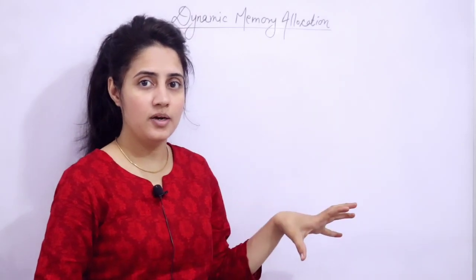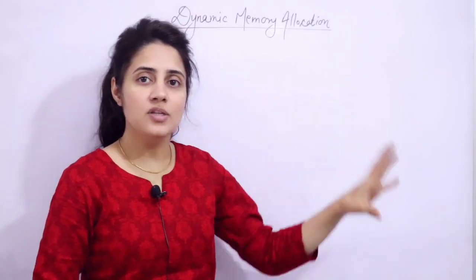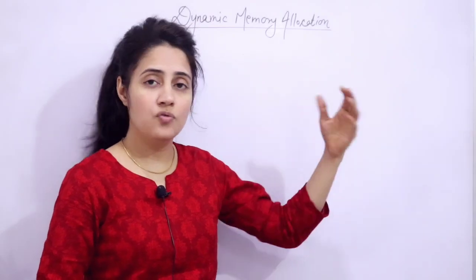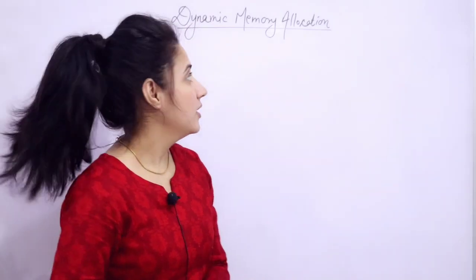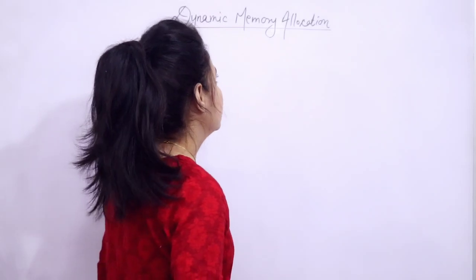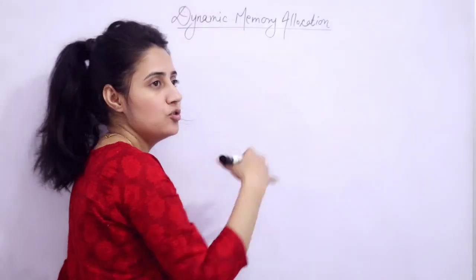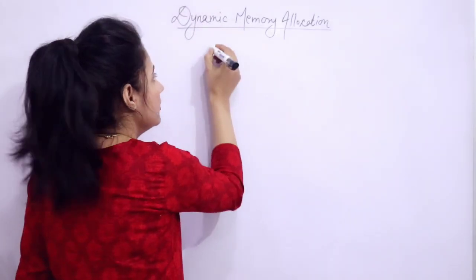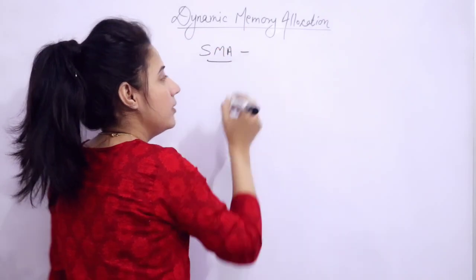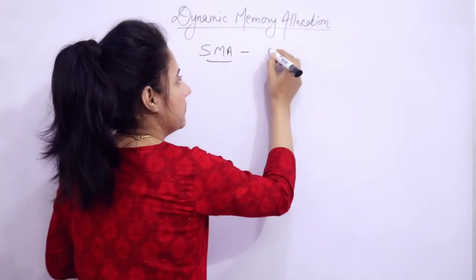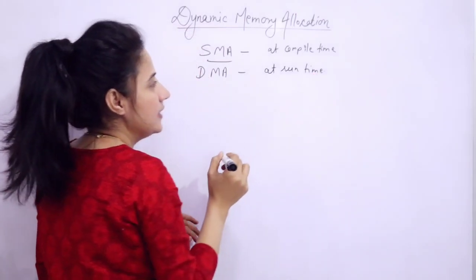In the later videos, we will see everything about dynamic memory allocation — the use of functions and everything — with the help of programs. Now, what is dynamic memory allocation? Generally, dynamic memory allocation means allocation of memory at runtime. And static memory allocation means memory would be allocated at compile time, while DMA memory would be allocated at runtime.